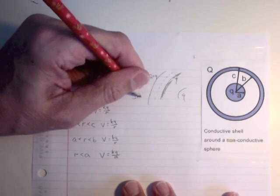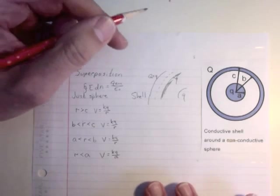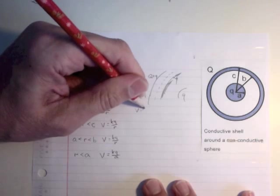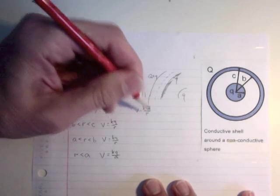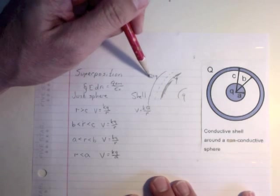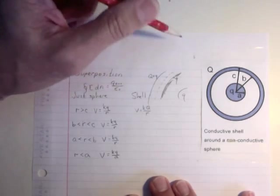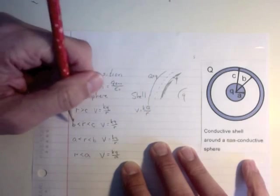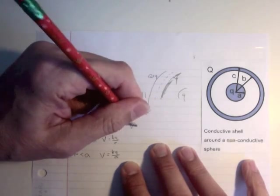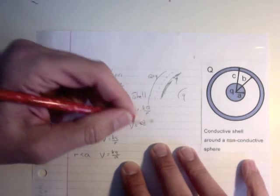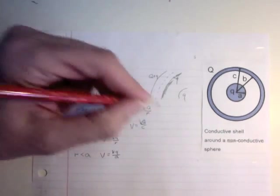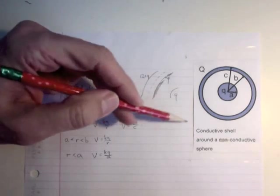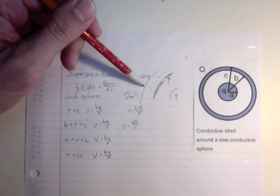Now let's do shell, just the shell. So at R greater than C, the voltage is just K big Q over R. And that big Q, remember the outer surface has q plus little q, inner surface has negative q, so that charge still is only Q.